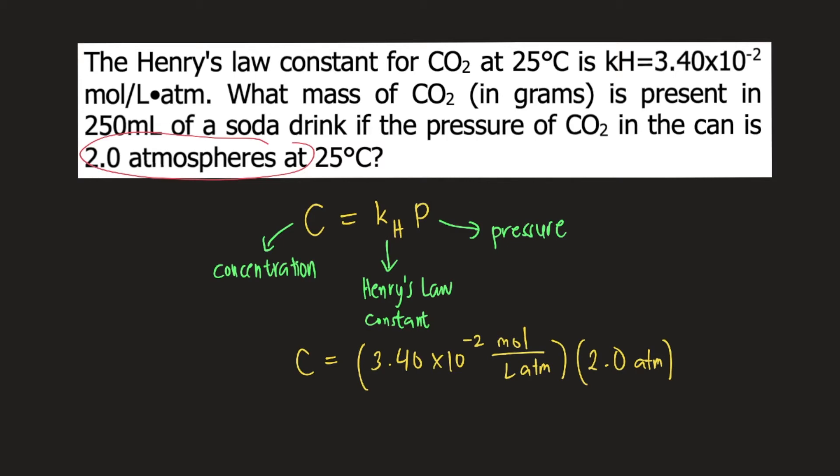Atm will cancel. The unit for C or concentration is moles per liter. If you solve for 3.40 times 10 raised to negative 2 times 2.0, which is equal to 0.068 moles per liter, this is the concentration of carbon dioxide in the soda can.